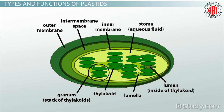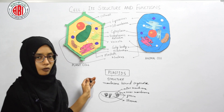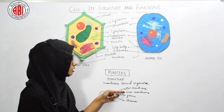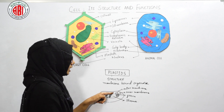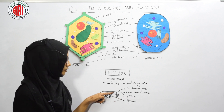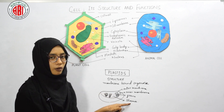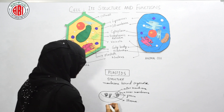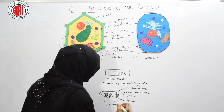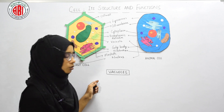Like mitochondria, chloroplast is also a membrane-bound organelle showing an outer membrane and an inner membrane. It contains coin-like structures called grana, and these grana are embedded in a material called stroma. This chloroplast structure helps in carrying out photosynthesis.